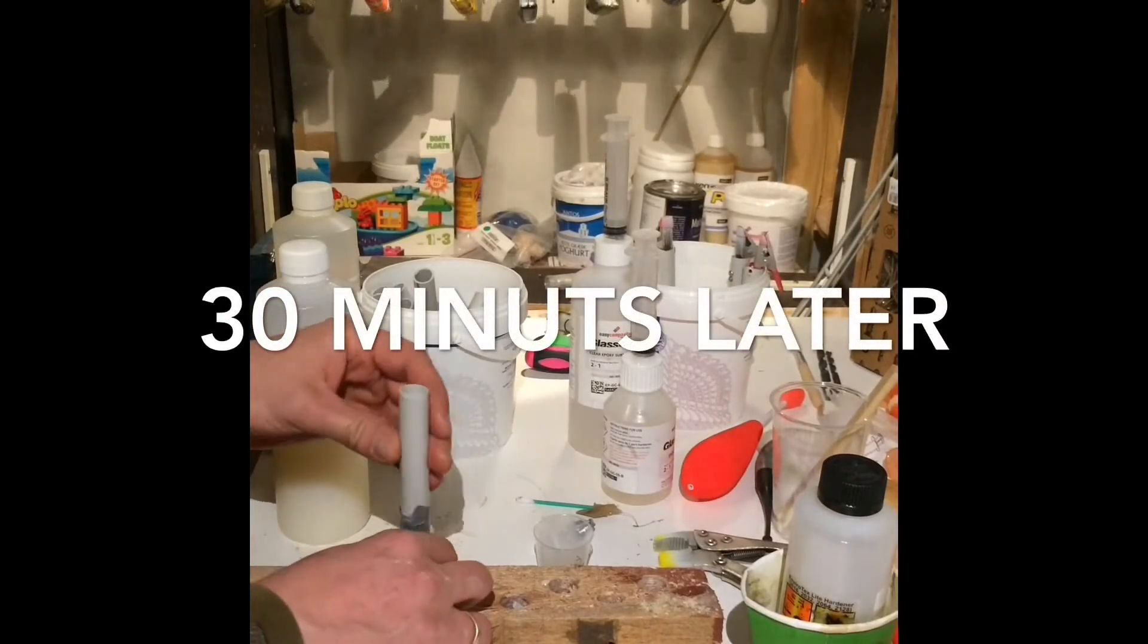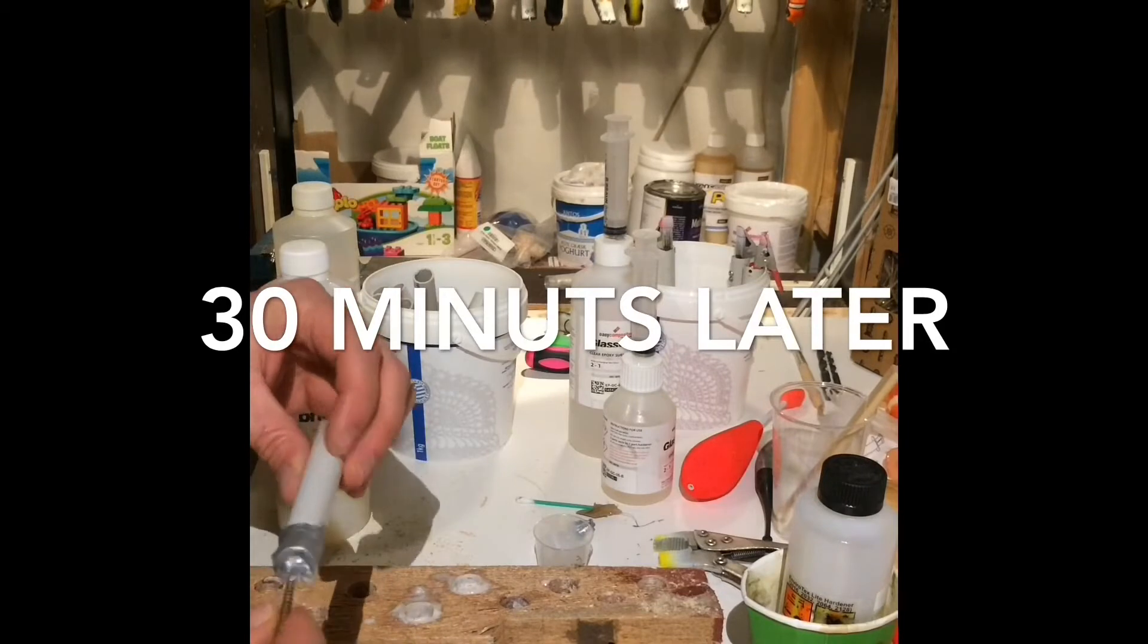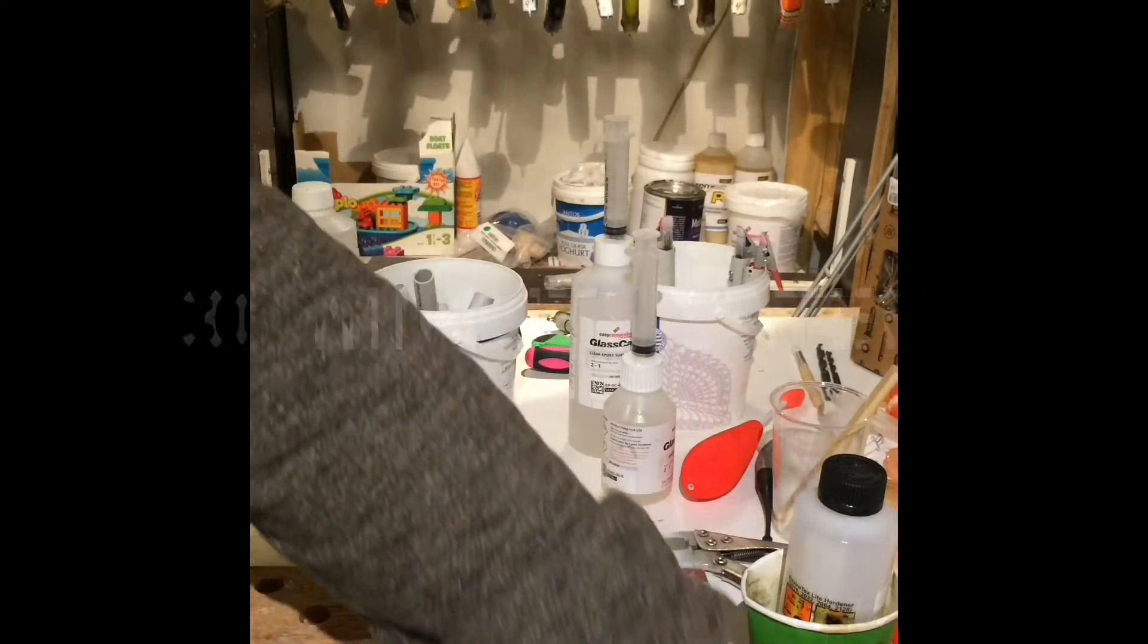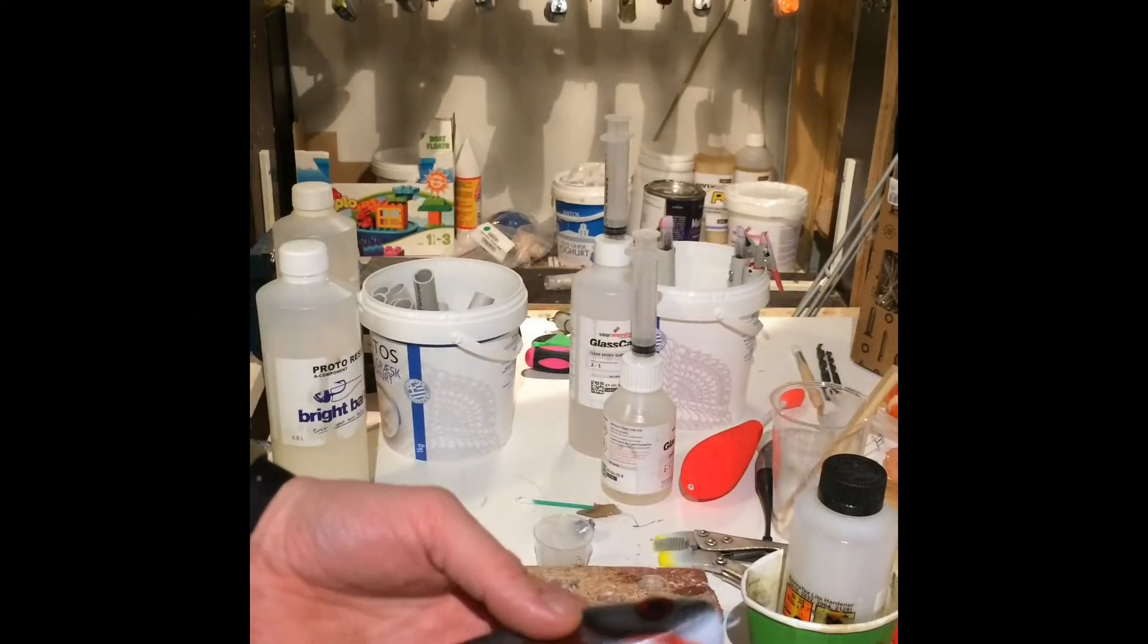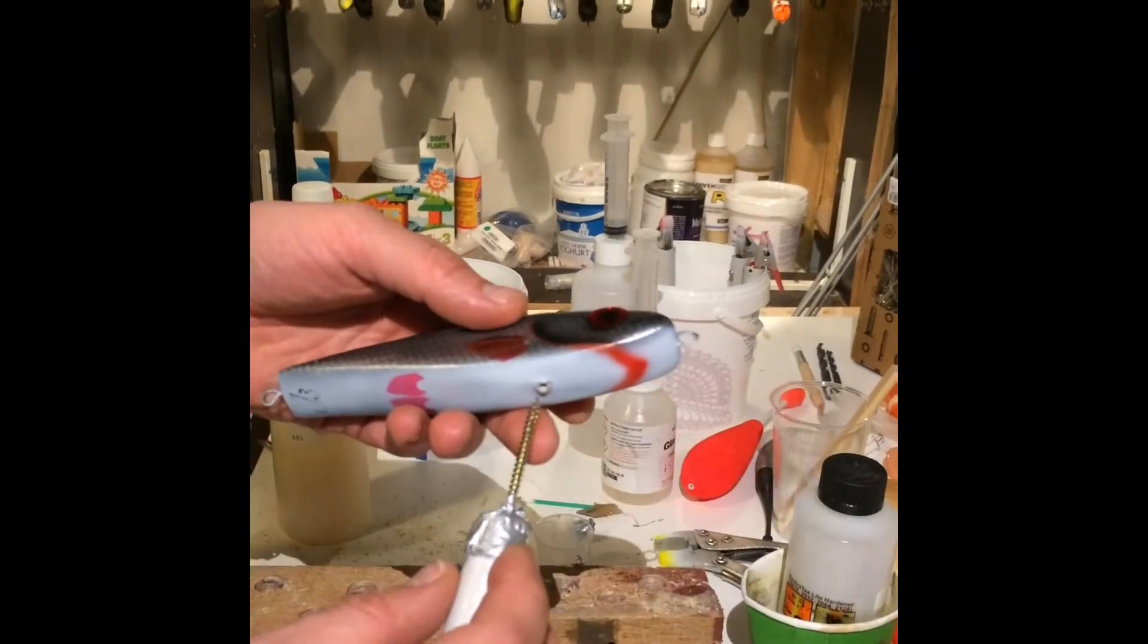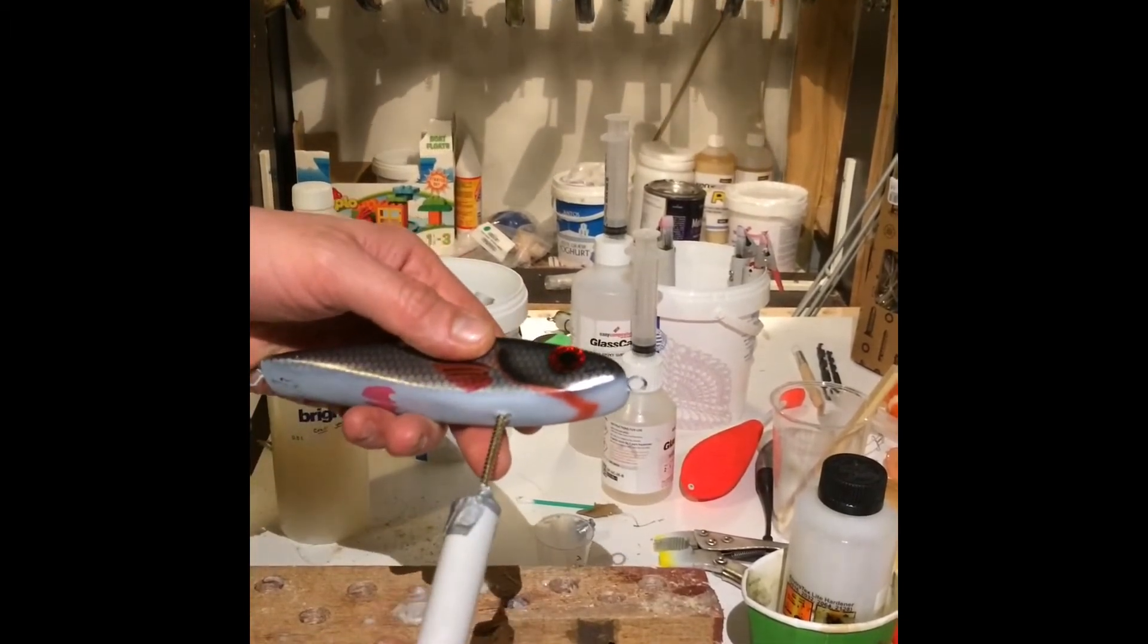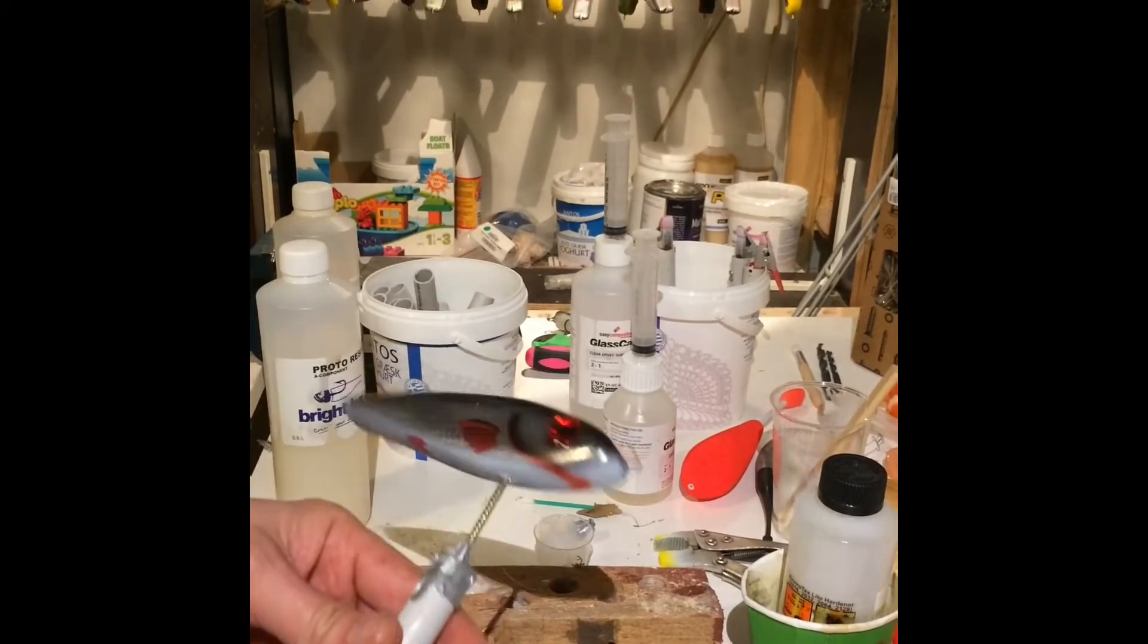It sets quite rapidly, so after 30 minutes it's actually done. You have made a small spike and you can insert it into your wooden lure and start painting or applying epoxy, which I am about to do.